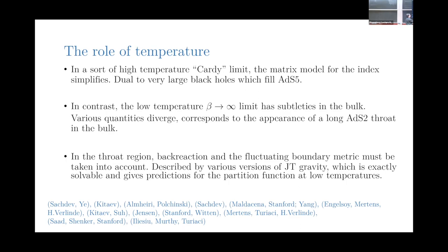In contrast, the low temperature beta-going-to-infinity limit has subtleties in the bulk — lots of quantities diverge, and this corresponds to the appearance of a long AdS throat in the geometry. As we go close to extremality, a long AdS2 throat develops, and we have to make sense of what happens to quantum fluctuations of the metric at low temperatures.